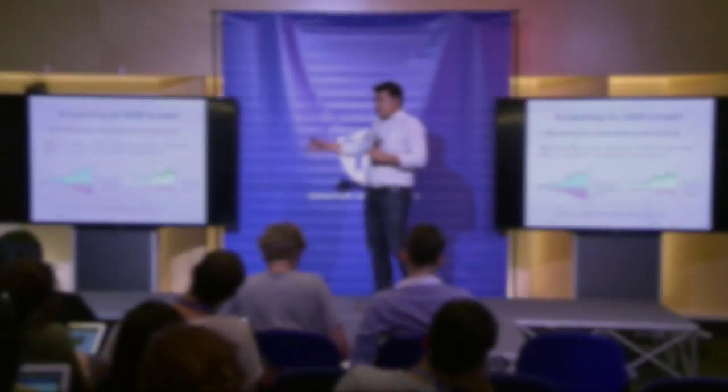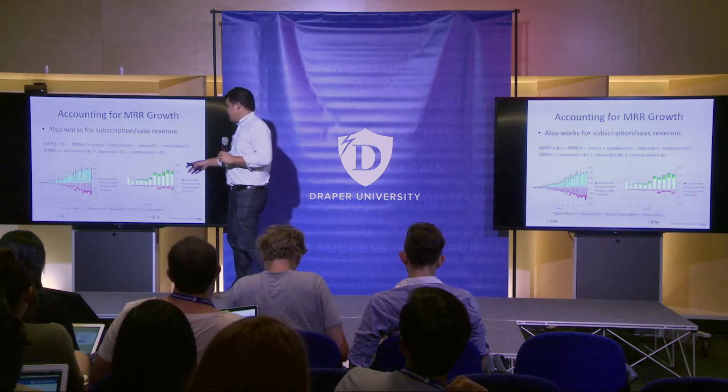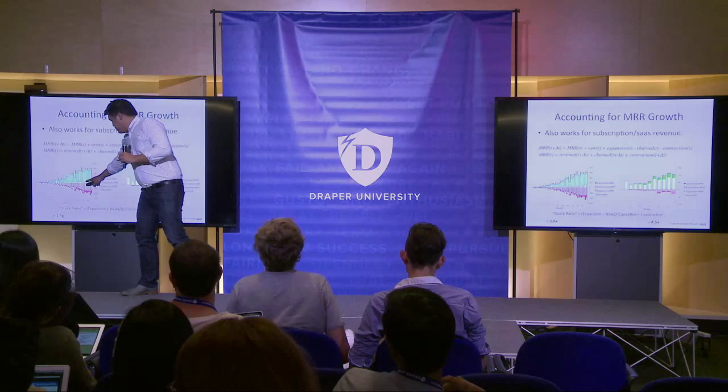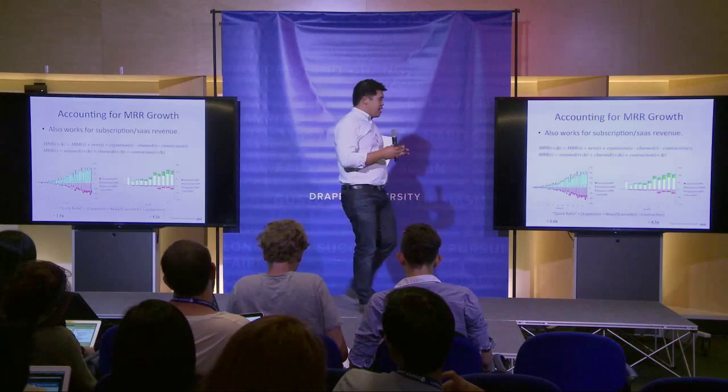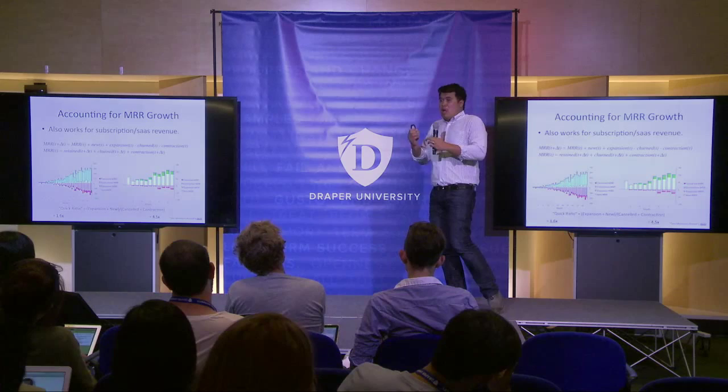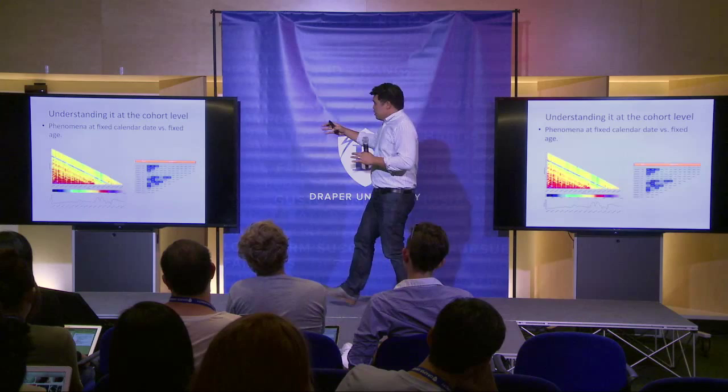We understand money coming in and money coming out, but the thing you don't know from looking at it this way is whether or not when this money falls out, did it fall out from users who came from a long time ago and then you lost them late in their life, or from users who just appeared and you lost them right away. Big difference.